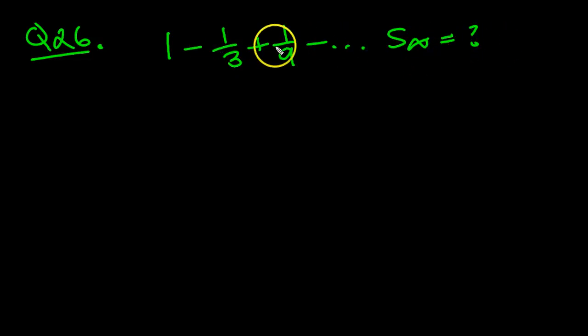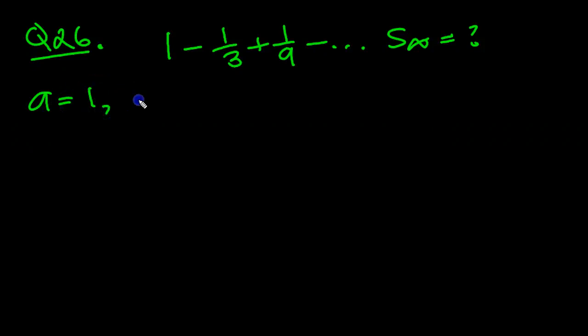And we want to find out the sum to infinity of these terms. We know that the first term here is 1. The common ratio that we're multiplying subsequent terms by is minus 1/3.